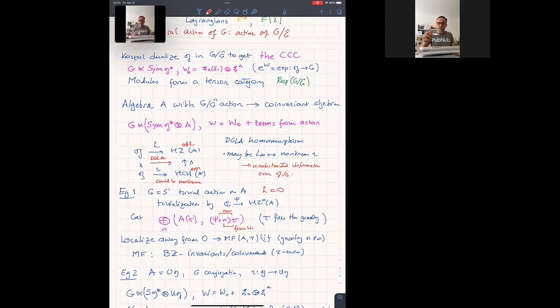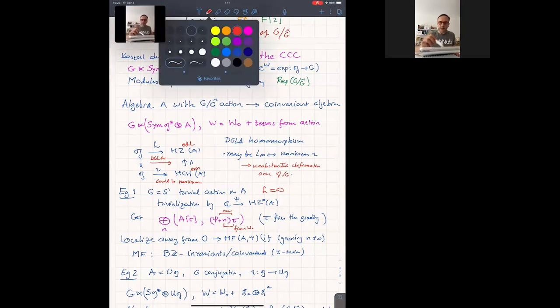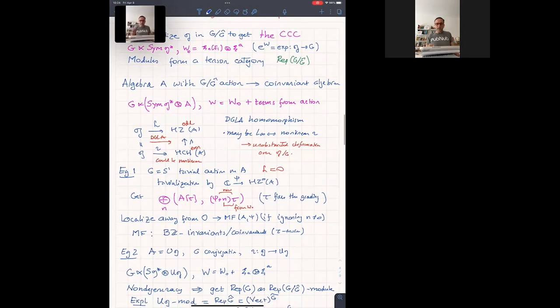And actually, if you think what the role Tau has is to fix the grading, so super potential has to be two. But if you care about the grading, if it localizes away from zero, you're going to get exactly the category of matrix factorizations for A with super potential Psi. And that gives you the interpretation of matrix factorization as invariants, modulo co-invariants for the BZ action. This is, you probably put the name down to Toën-Pregel.